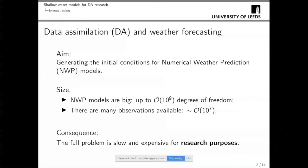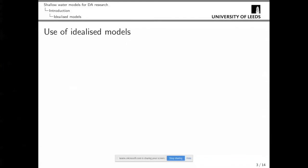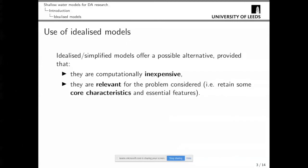What we do instead, generally speaking, is try to simplify the problem using idealized models. Idealized models are a way to work around this, and two important aspects are that they need to be inexpensive numerically speaking, but also they need to retain some link to the real problem and remain relevant for the problem under consideration — retaining core, essential characteristics that pertain to the problem studied.